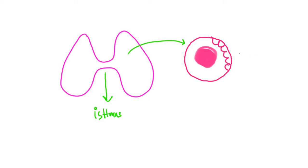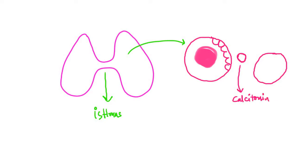Within the two follicles there are specialized cells called parafollicular cells. These cells line between the follicles, so they are called parafollicular cells, meaning in the vicinity of the follicles. The function of these parafollicular cells is to secrete a hormone called calcitonin. Calcitonin plays a role in the homeostasis of calcium — it decreases calcium in the blood and increases the deposition of calcium over the bones. These are the two cell types found inside the thyroid gland.